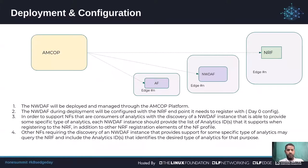For deployment and configuration, we use ARNA's AMCOP platform, which simplifies the deployment and configuration path. All network functions — NWDAF, NRF, and application function — can be deployed on multiple edge clusters, but for this demo we deploy all of them in a single edge cluster and observe their interaction via the AMCOP platform.